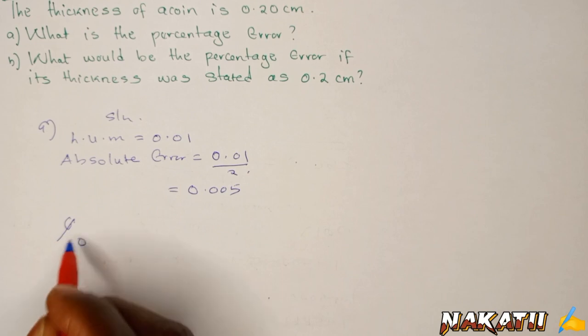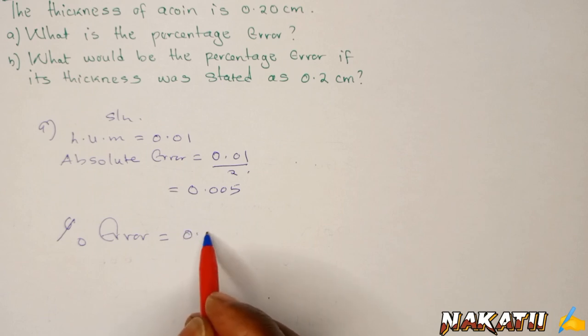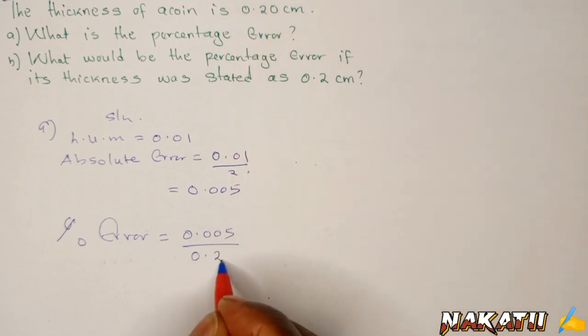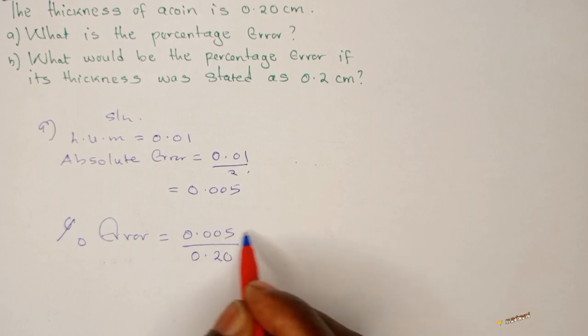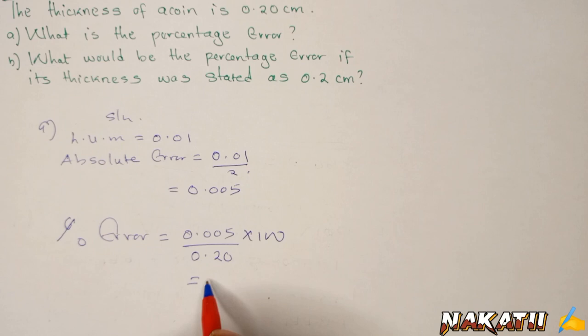Therefore, percentage error will be the absolute error, which is 0.005, divided by the actual measurement, which is 0.20, then times 100. So you get the percentage error is 2.5%.